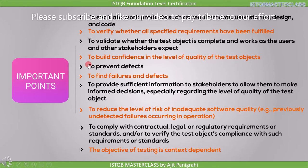The fifth objective is to prevent defects. The sixth objective is to find failures and defects. The seventh objective is to provide sufficient information to stakeholders to allow them to make informed decisions, especially regarding the level of quality of the test object.